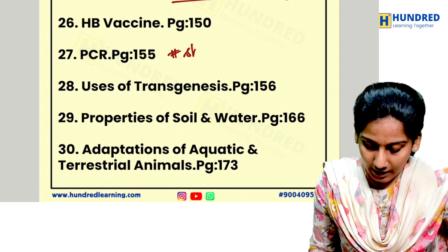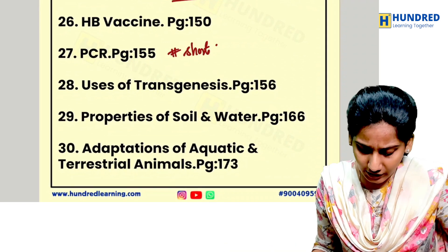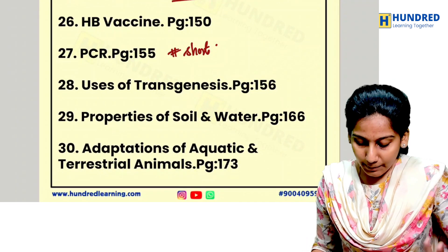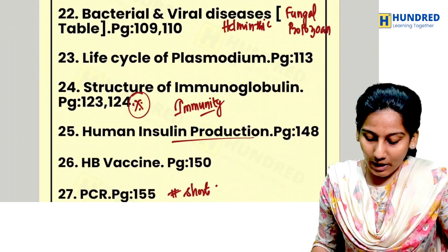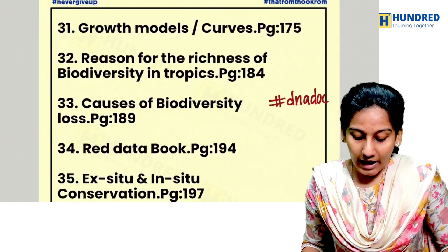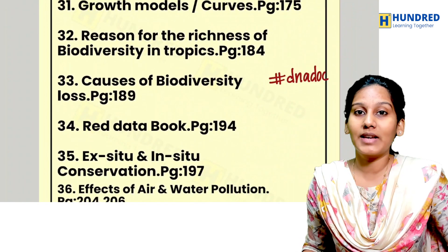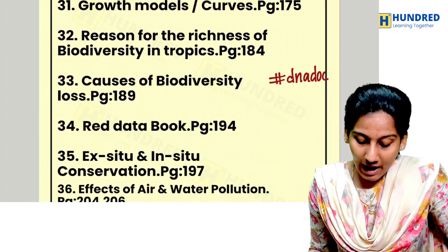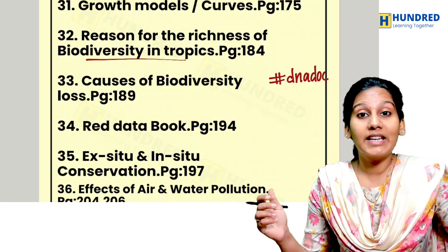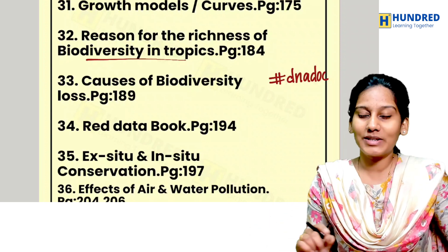Study the uses of transgenics, properties of water, and adaptations of aquatic and terrestrial organisms. In Chapter 10, focus on growth models with graph-based questions, age pyramids, reasons for richness of biodiversity in the tropics, and causes for the loss of biodiversity.